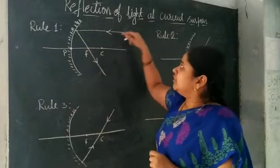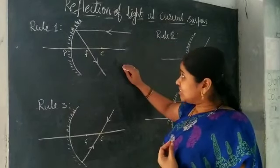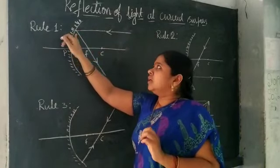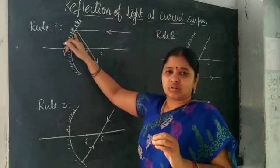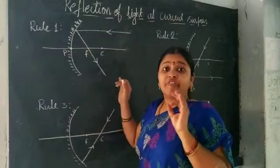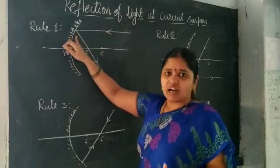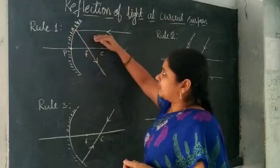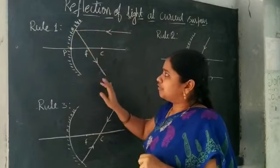The first rule: the rays which are coming parallel to the principal axis will hit the surface of the concave mirror. The light does not penetrate the opaque surface — it bounces back. The nature of the ray parallel to the principal axis: after reflection, it will pass through the focus, the focal point.